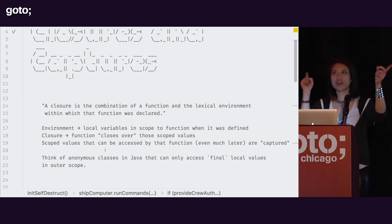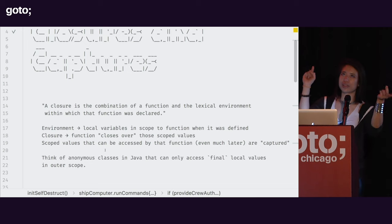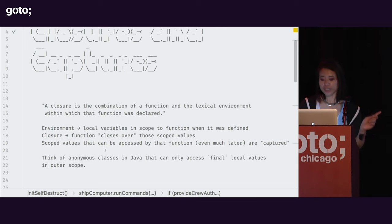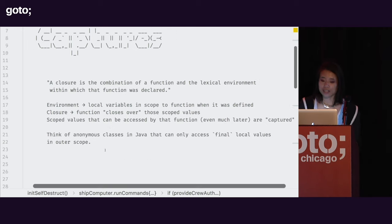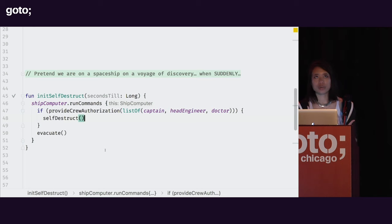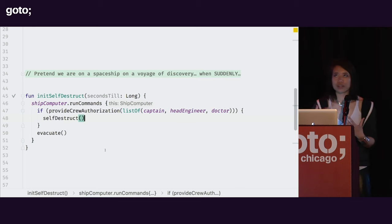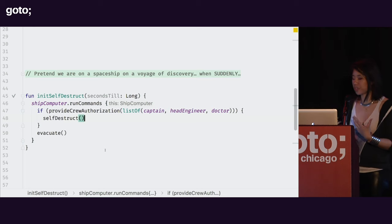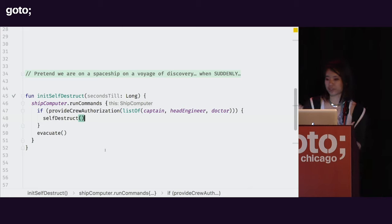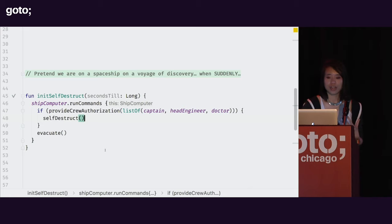This is related a lot to Java, where you have an anonymous class that reaches out — those values have to be final because of the way that closures and captures are done in Java. But we're in Kotlin land, so let's talk about Kotlin.